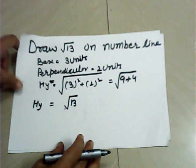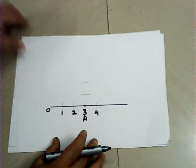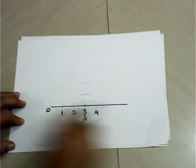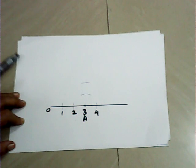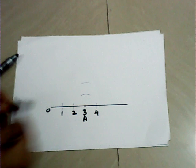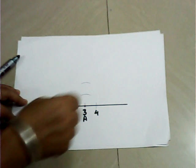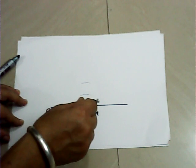For the number line of √13, we take a number line, divide it into 4 equal parts. This is 1 unit, this is 2 units, 3 units, and 4 units.